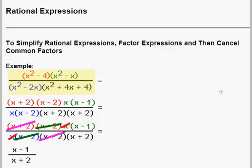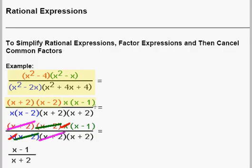Our first step in simplifying this is to factor all polynomial expressions. x squared minus 4 factors as x plus 2 times x minus 2 — that's a difference of squares. x squared minus x has a common factor of x and factors as x times x minus 1. In the denominator, x squared minus 2x factors as x times x minus 2. And x squared plus 4x plus 4 is a trinomial that factors as x plus 2 times x plus 2.